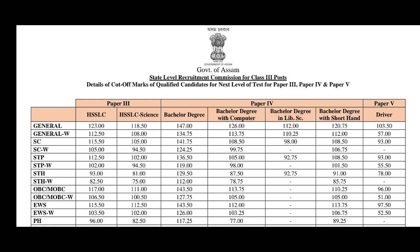Grade 3 results have already been declared for Paper 3, Paper 4, and Paper 5. Paper 3 is SSLC and SSLC Science. Paper 4 is Bachelor Degree, Bachelor Degree with Computer, Bachelor Degree in Library Science, and Bachelor Degree with Shorten. Paper 5 is Driver.